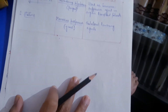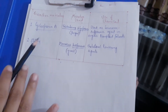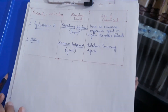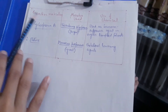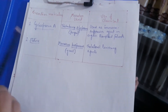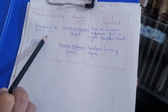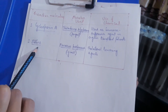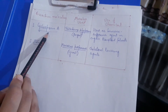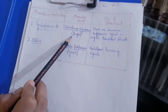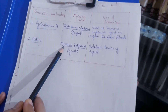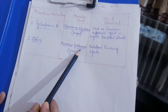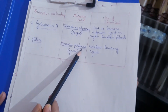Now let's look at bioactive molecules made with the help of microorganisms. Cyclosporin A is produced by the fungus Trichoderma polysporum. Statins are produced by the yeast Monascus purpureus. Questions frequently come from this topic — which fungus or yeast is used to produce these bioactive molecules.